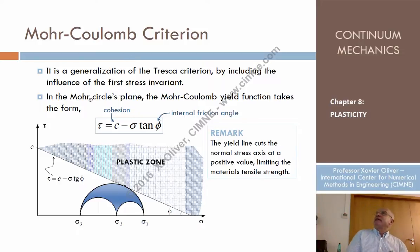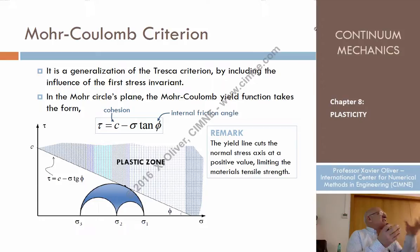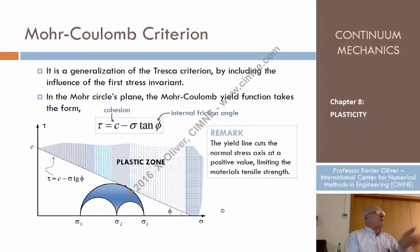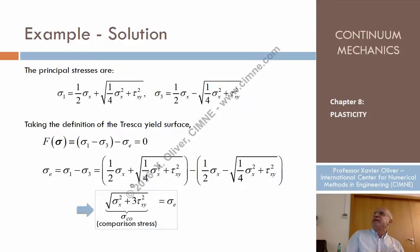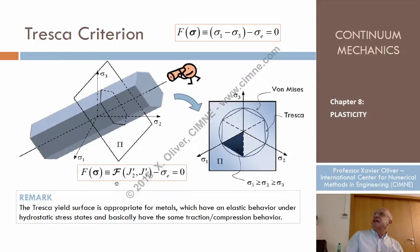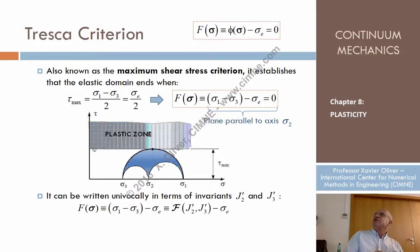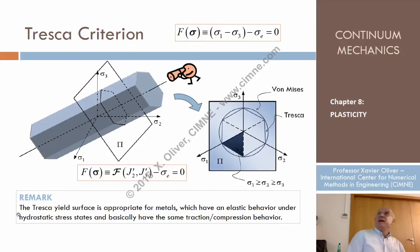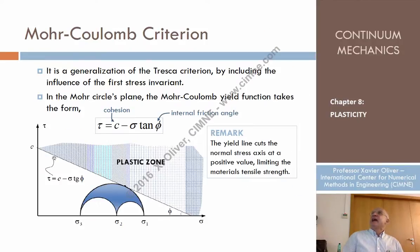Now, retrieving the methodology we used for the Tresca criterion: the starting point was that the material fails when the maximum shear stress in the Mohr space reaches a certain value. But now let's consider that the limit — which in the Tresca case was a horizontal line — is instead a straight line with a slope, meaning there is a dependence on the position in the sigma direction.